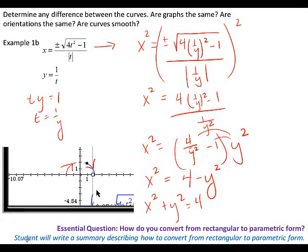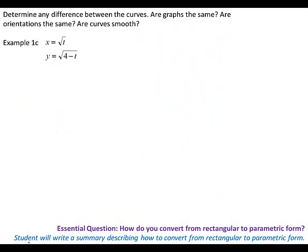Did we just draw the half circle? Yes — you just draw the half circle because the domain restriction was different, since we had a different set of parametric equations to begin with. Parametric equations mean we've got two different equations adding the third variable for time. For example 1C, I need to solve for t — the x is easier, so I'm going to square both sides to get x squared equals t, and then substitute x squared in for t in the other equation.